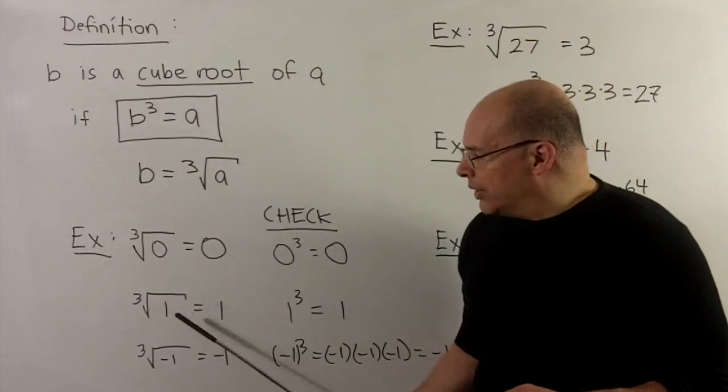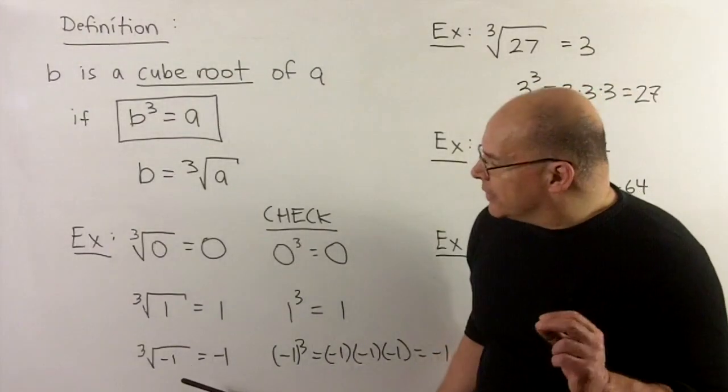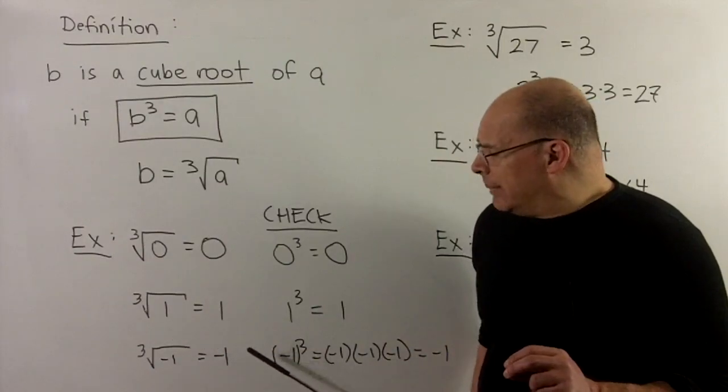Likewise, cube root of 1 is 1. 1 cubed is going to be a 1. And a little bit different than square root, if I take the cube root of minus 1, I'm going to get a minus 1 out.